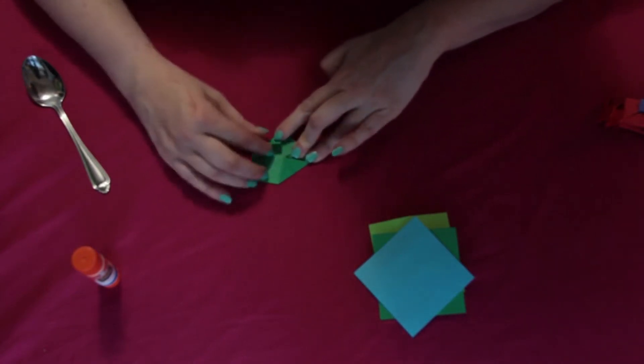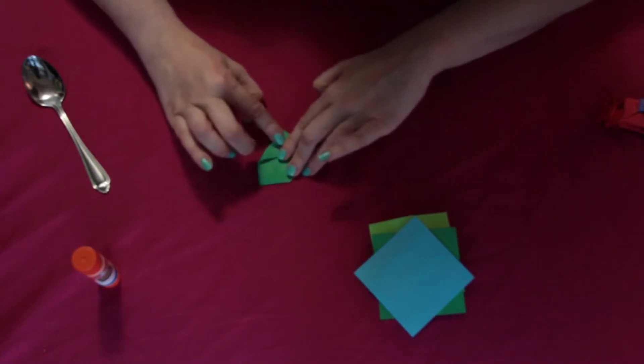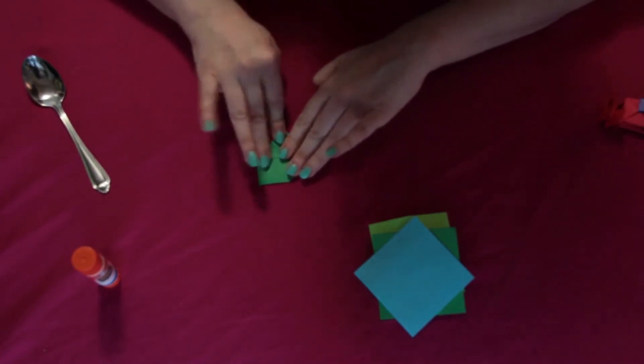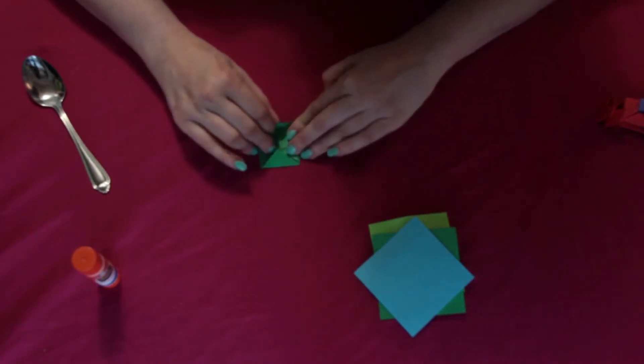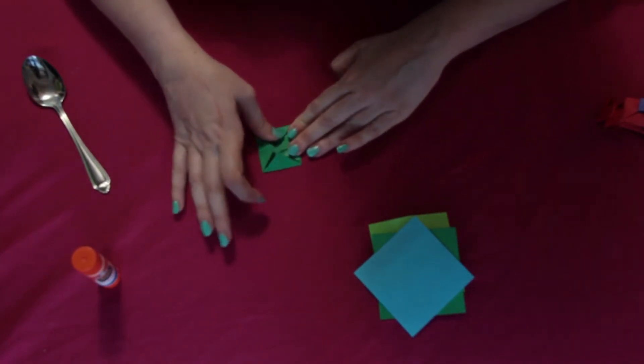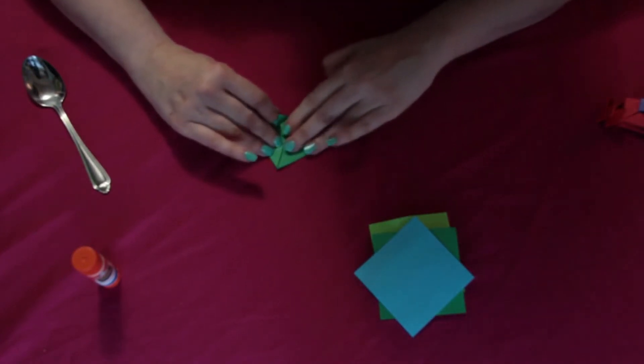The nice thing about this is once you learn how to do it, you can do it with any kind of stiff paper you want. So this is just colored printer paper. You can use construction paper if you want. You can use cardstock. You can use origami paper. I've used candy wrappers in the past from like those Hershey's miniatures.